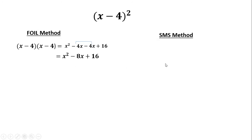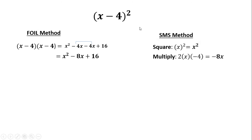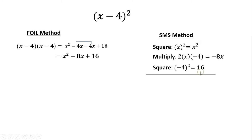Alternatively, using the SMS method: S — square of the first term: x² . M — multiply: 2 times x times (−4) = −8x. S — square of the second term: (−4)² = positive 16. Combining: x² − 8x + 16. Both methods confirm (x − 4)² = x² − 8x + 16.